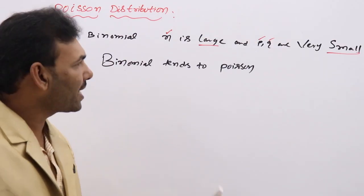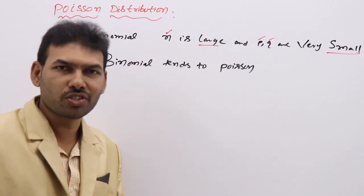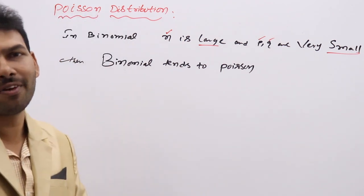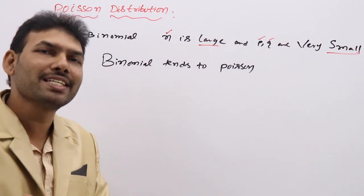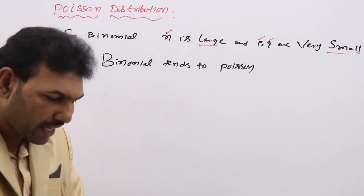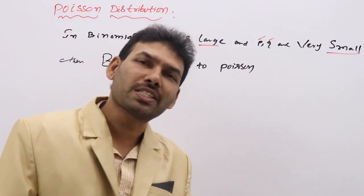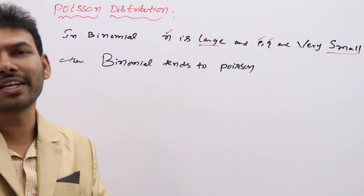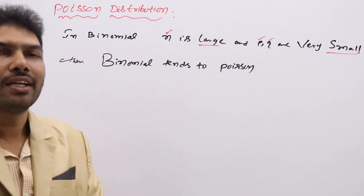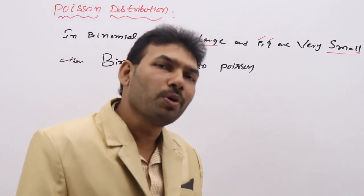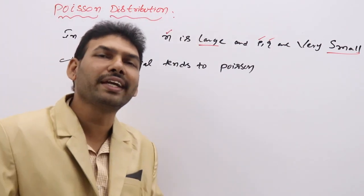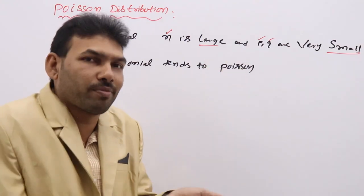In those cases, we go for Poisson. By reading the problem itself, you can easily understand the problem is in Poisson. For example, if you take a problem like this: 2% of items in a factory are found to be defective. Find the probability of 2 defective, 0 defective, at least 3 defective in a box of 100 items.